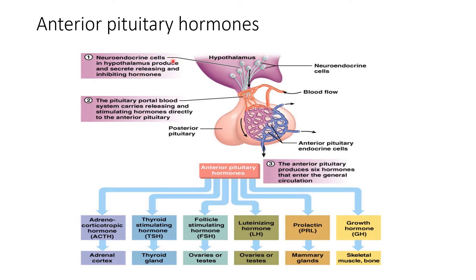Here we have the neurosecretory neuron. It synthesizes hormones in the cell body, and they travel to the median eminence. The hormones are secreted into the hypophysial portal capillary, carried via the portal vessel to the pituitary gland, and released into the venous blood draining the anterior pituitary gland. The anterior pituitary gland then releases its hormones, which are carried via the blood to their final destination.